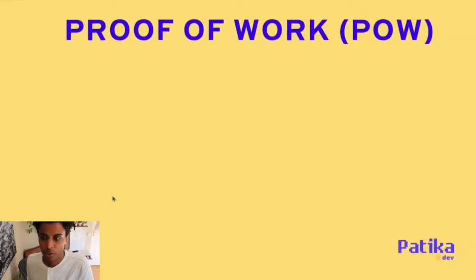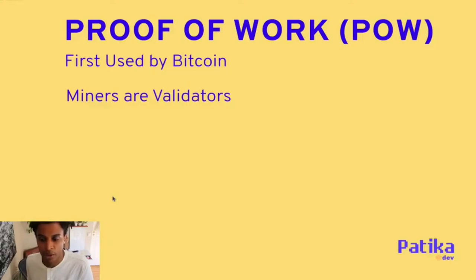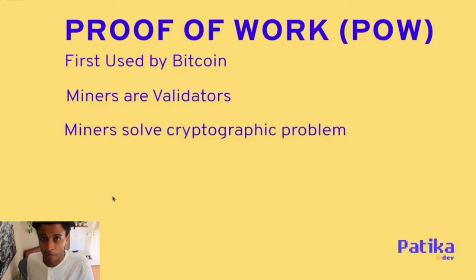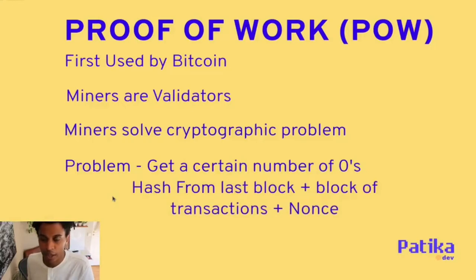There are different ways of doing that. The first one is proof of work, first used by Bitcoin — the first blockchain deployed. Instead of nodes, they're called miners, and they are responsible for validating the transactions. Miners actually solve a cryptographic problem. Taking the hash function, the problem is to get a certain number of leading zeros. We take the hash from the last block, the block of transactions, and a nonce value — a number used only once.